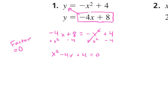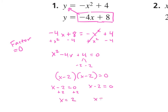Do we have two factors of 4 that add and give us negative 4? Negative 2 and negative 2. So we have (x − 2)(x − 2) equals 0. We could write it as (x − 2) squared — either way works. Setting x minus 2 equal to zero gives x equals 2, and since both factors give the same answer, we only use one x value.